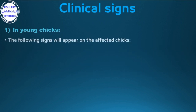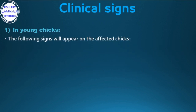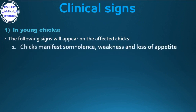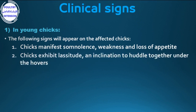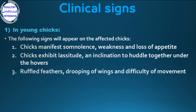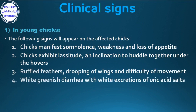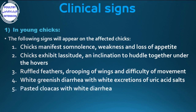The following signs appear on affected chicks: 1. Chicks manifest dullness, weakness, and loss of appetite. 2. Chicks exhibit lethargy and an inclination to huddle together under heaters. 3. Ruffled feathers, drooping wings, and difficulty of movement. 4. White to greenish diarrhea with white excretions of uric acid salts. 5. Pasted cloaca with white diarrhea.